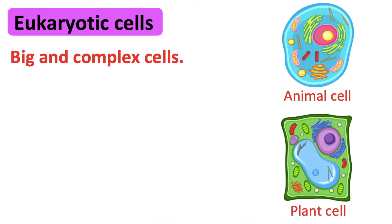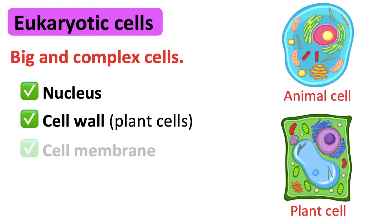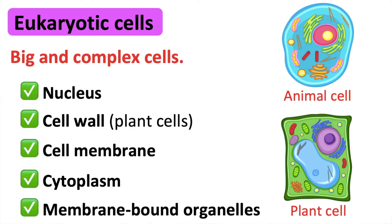Eukaryotic cells. These are big and complex cells. The genetic material of eukaryotic cells are enclosed in a nucleus. They also have a cell wall, cell membrane, cytoplasm and other membrane-bound organelles.